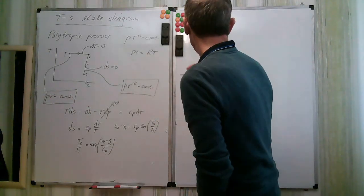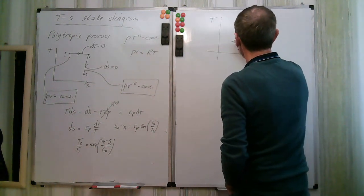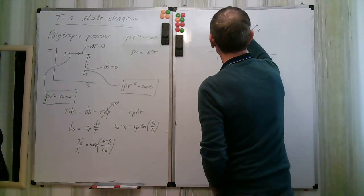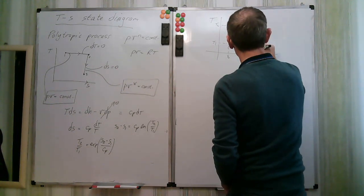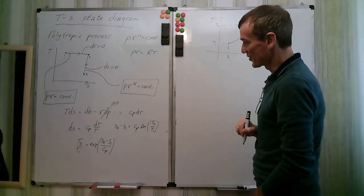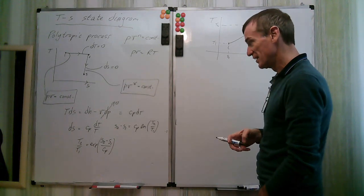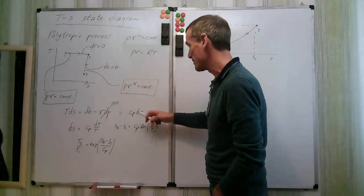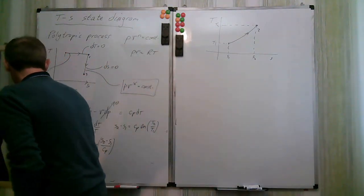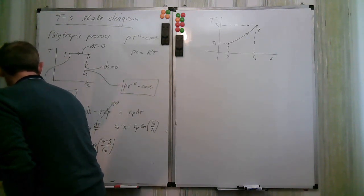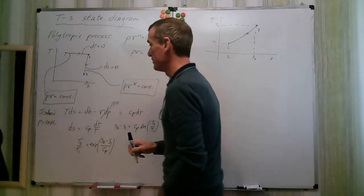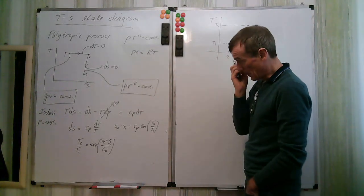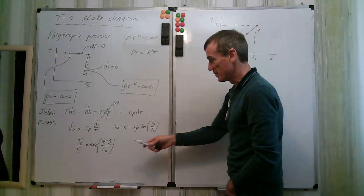So on the TS diagram, the isobaric process gives an exponential increasing curve, going from T1 to T2 and S1 to S2. On the PV diagram it's just a horizontal line since pressure is constant. The TS diagram gives a different, exponential curve described by that relationship.